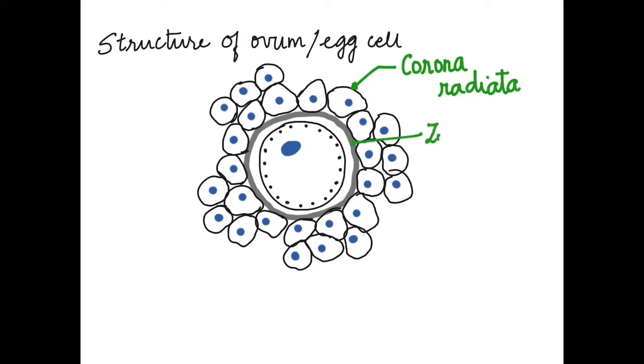Next to that is a thick layer of glycoprotein which is called zona pellucida, which is for protection. Between the oocyte and the zona pellucida is present a space. This space is what we call the perivitelline space.